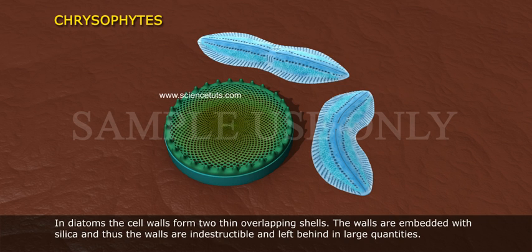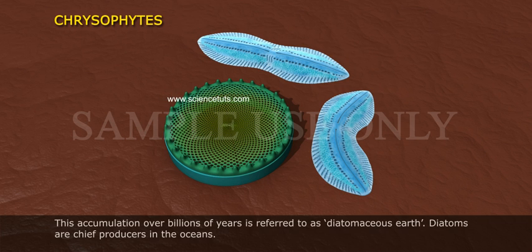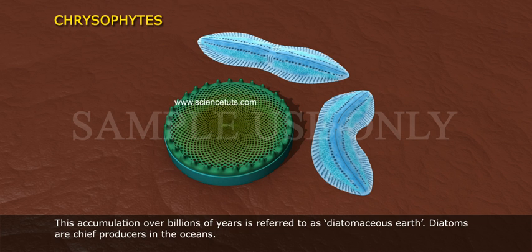In diatoms, the cell walls form two thin overlapping shells. The walls are embedded with silica, making them indestructible. These walls are left behind in large quantities, and their accumulation over billions of years is referred to as diatomaceous earth. Diatoms are chief producers in the oceans.